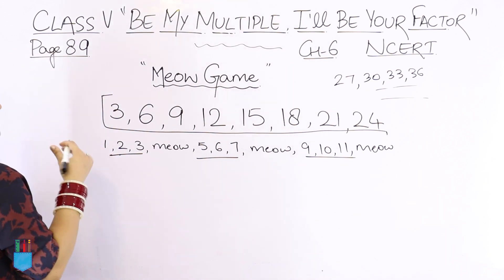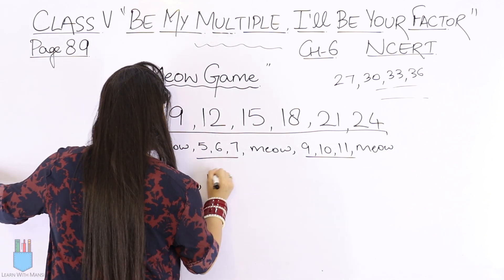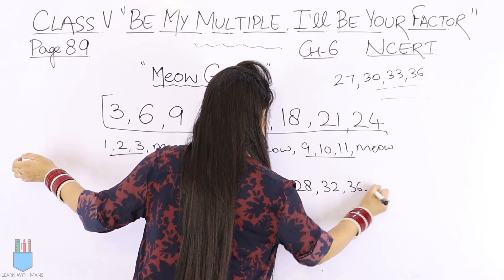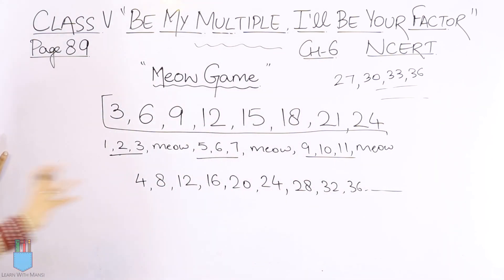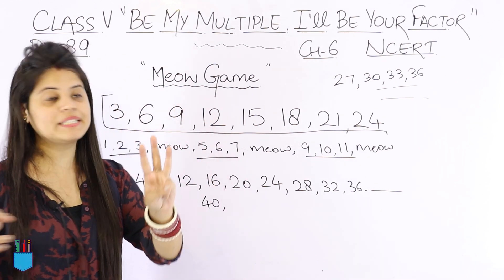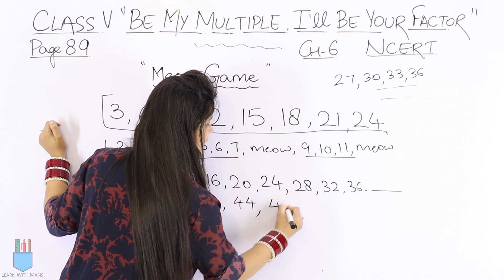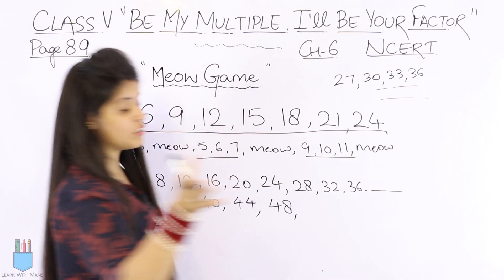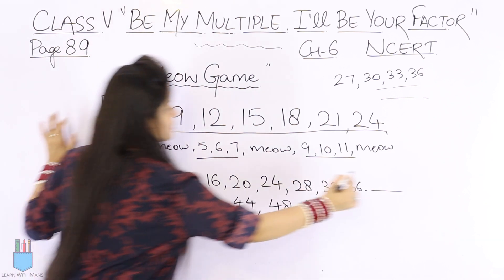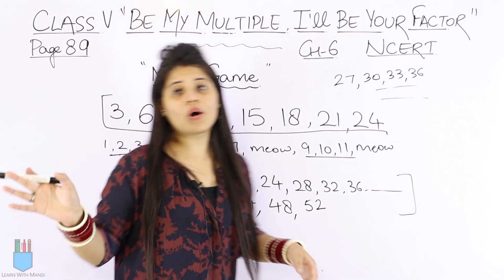So which numbers can be divided by four? The table of four: 4, 8, 12, 16, 20, 24, 28, 32, 36, 40, 44, 48, 52 and so on. After 40 you count three numbers: 41, 42, 43 — then 44 is Meow. Similarly 45, 46, 47 — Meow at 48. Then 49, 50, 51 — Meow at 52. So every three numbers, the next number is divisible by four. All of these numbers — 4, 8, 12, 16, 20, 24, 28, 32, 36, 44, 48, 52 — are multiples of four.